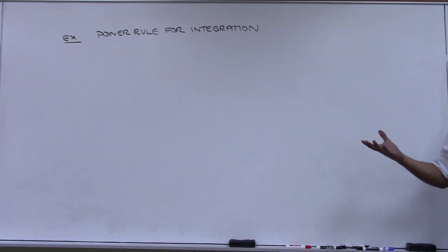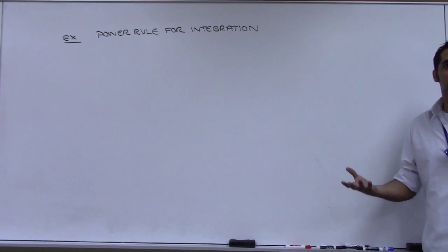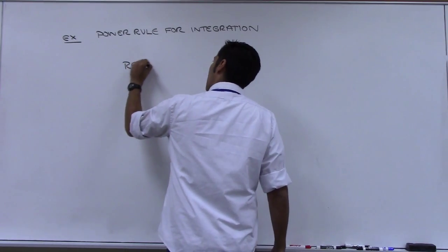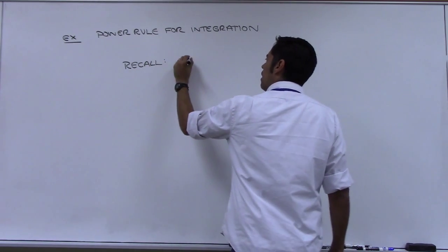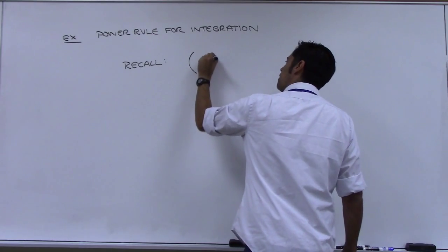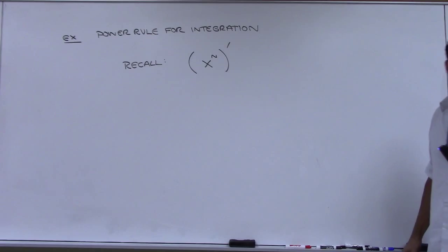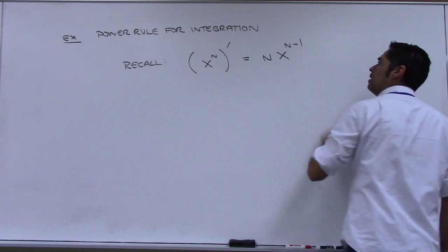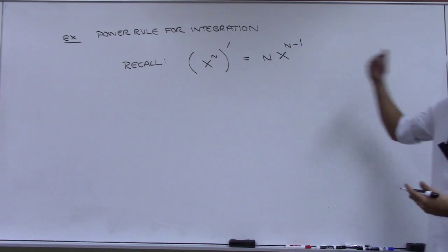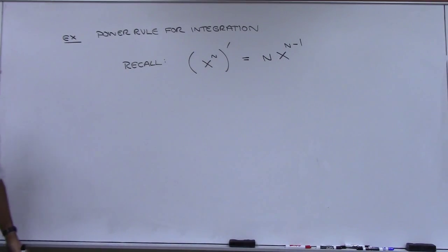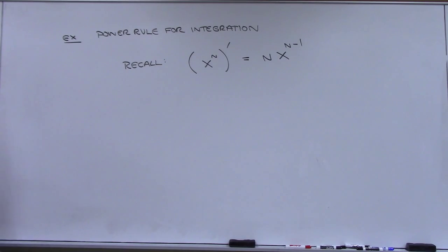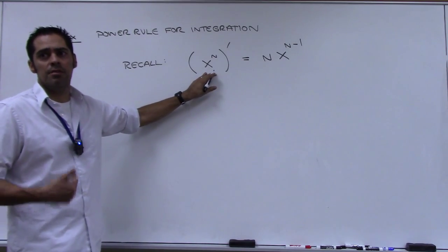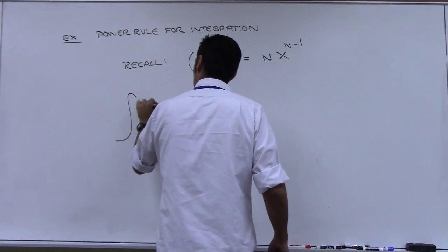I'm going to start by reminding you of what the power rule was for differentiation, not integration. Recall that in Cal-1, if you were asked to find the derivative of x to the n, it was n times x to the n minus one. That's where we got the whole idea of the power coming down and subtracting one from the power. Now what we need is to see if we can come up with the rule for integrating x to the n instead.